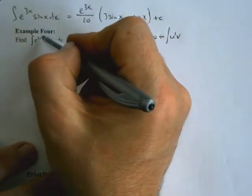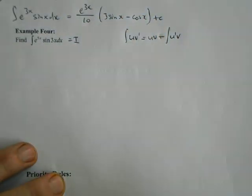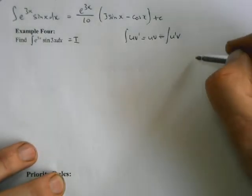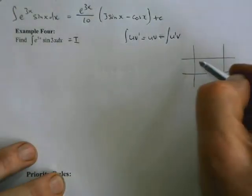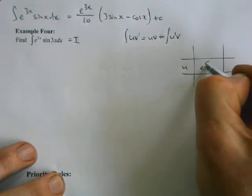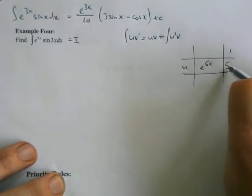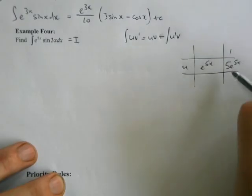We've got integration by parts again. The priority: there's no log, there's no x to the power of, so the one which is going to be u is going to be e to the 5x. So u is e to the 5x, so u dash is 5 e to the 5x.